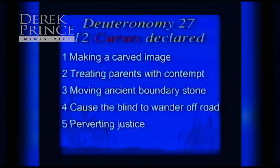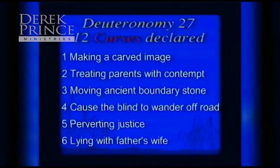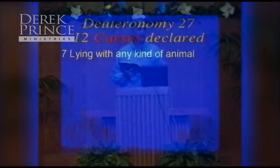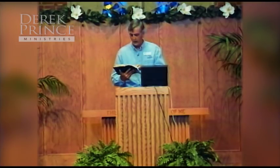Verse 19, a fifth source: 'Cursed is the one who perverts the justice due to the stranger, the fatherless, and the widow.' If you treat a stranger incorrectly, you offend the one who has committed himself to caring for those that no one else will care for. Verse 20: 'Cursed is the one who lies with his father's wife.' Verse 21: 'Cursed is the one who lies with any kind of animal.' If you analyze these 12 curses, five of them relate to injustice and four relate to improper sex — telling us what is really important to God.